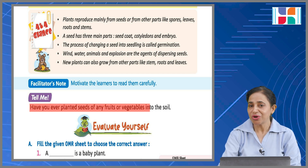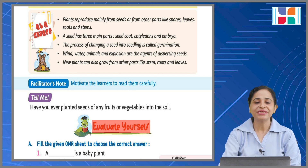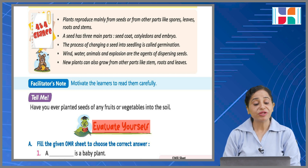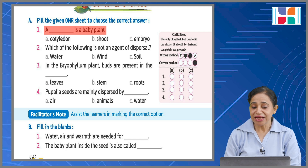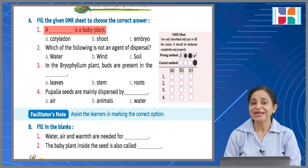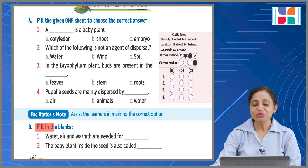Tell me — have you ever planted seeds of any fruits or vegetables in the soil? Now it's evaluation time. An OMR sheet is given and you have to choose the correct answer. If you have read the chapter carefully you will be able to answer properly. For example, the first question asks: the dash is a baby plant — you have to identify the correct option. Likewise, go through all the points and select the correct option to check your chapter knowledge.